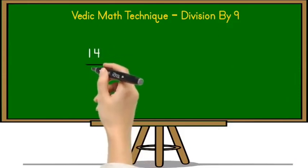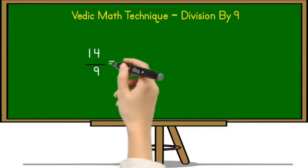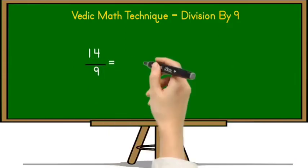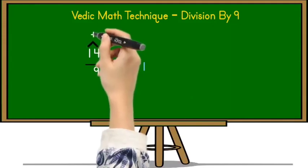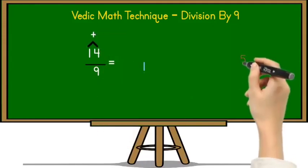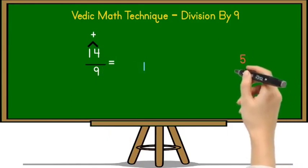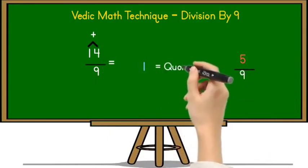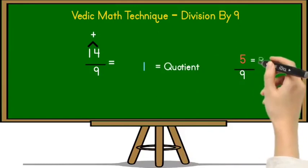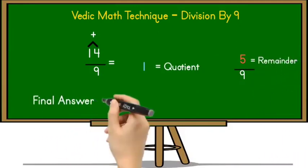The first example is 14 divided by 9. To solve this using the Vedic math technique we follow some steps. First, write down 1, which is the 10th place digit of 14. After that, add the unit and 10th place digits of 14 together: 1 plus 4 equals 5. Write down 5. Now 5 is less than 9, so we cannot divide again. So 1 is the quotient and 5 is the remainder. The final answer is 1 and 5/9 in mixed fraction form.